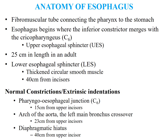Anatomy of Esophagus. The esophagus is a fibromuscular tube connecting the pharynx to the stomach. It begins where the inferior constrictor muscle merges with the cricopharyngeus at C6 level, forming the upper esophageal sphincter. In a grown-up adult, the esophagus is 25 cm in length. The lower esophageal sphincter is a thickened circular smooth muscle and lies 40 cm from the incisors.